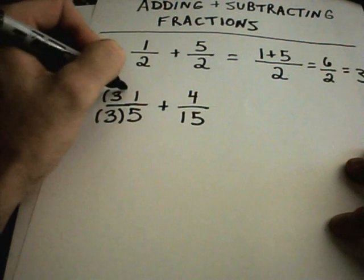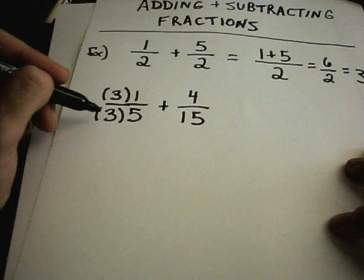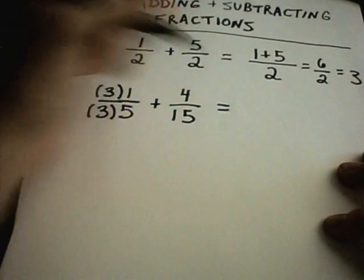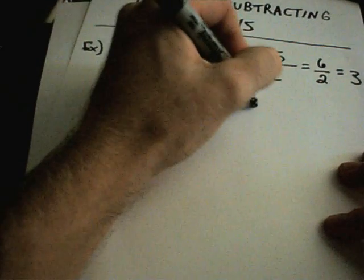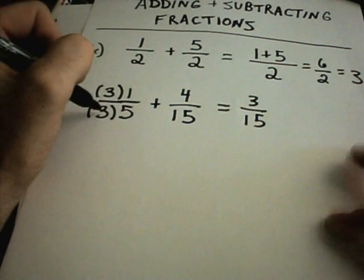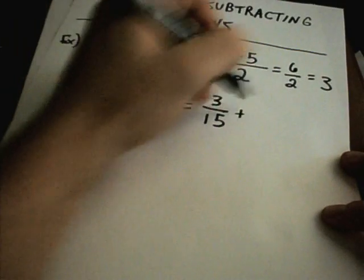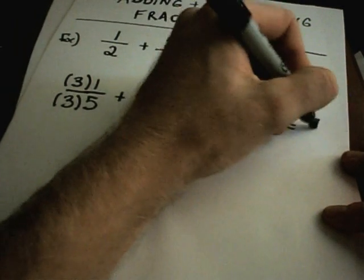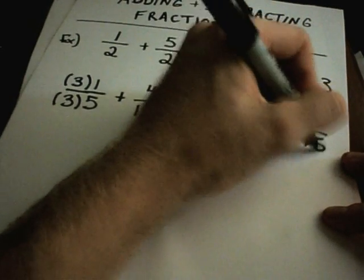Whatever you do to the bottom of the fraction, if you multiply the bottom by a number, you have to multiply the top by that same number. In this case, I'm going to get 3 over 15 for my first. 3 times 1 is 3, 3 times 5 is 15. I'm not doing anything to the other one, so I'll be left with 7 over 15 as my solution.